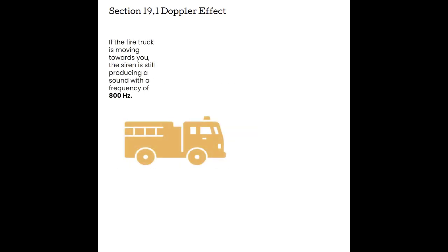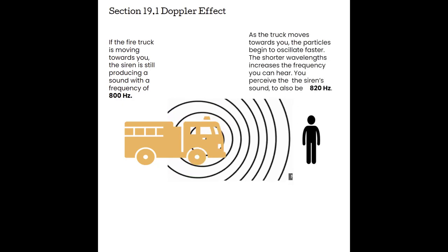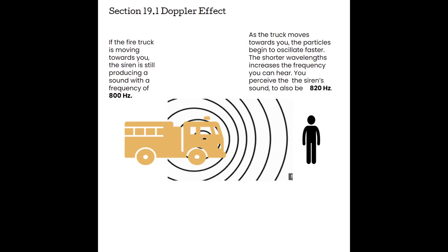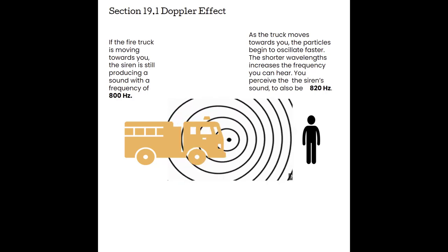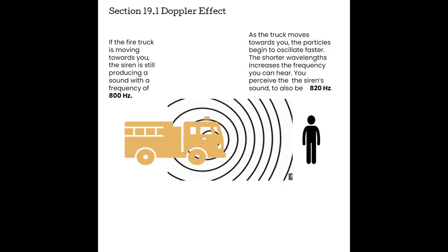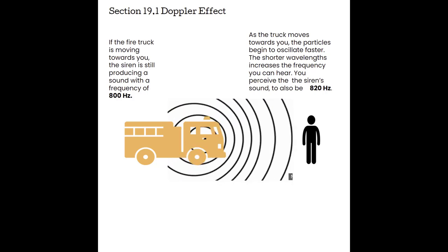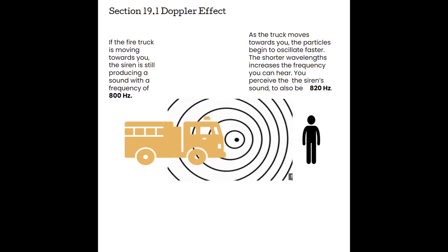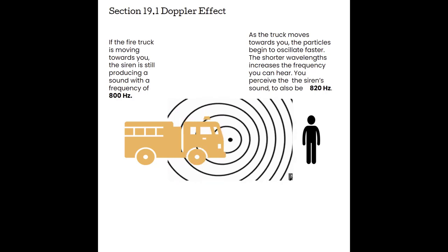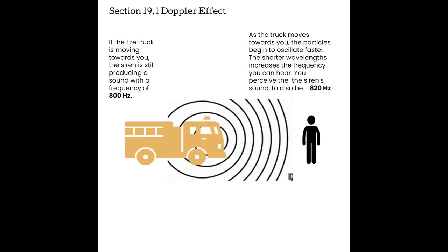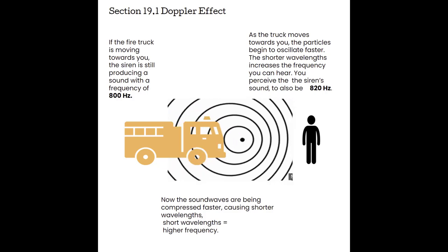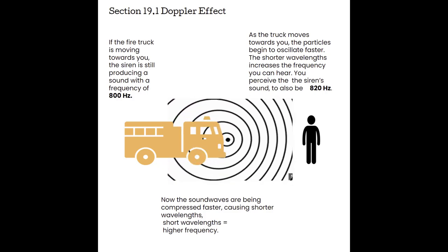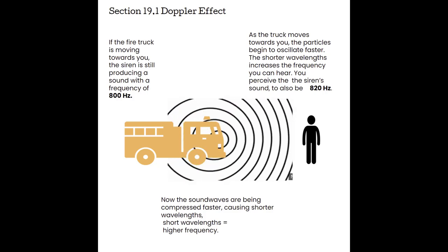If the truck is moving towards you, the siren is still producing a frequency of 800 Hz. But as the truck moves towards you, the particles are going to begin to oscillate faster, creating shorter wavelengths, which increases the frequency that you hear. So you perceive the siren sound to be 820 Hz. The frequency of the siren has not changed, but the fact that it's moving towards you changes how the particles are interacting, thus increasing the frequency you can hear. Notice how the sound waves are being compressed faster, causing shorter wavelengths — and short wavelengths equal higher frequency.